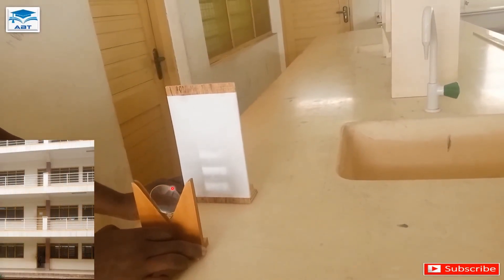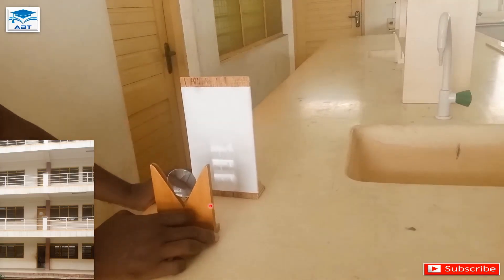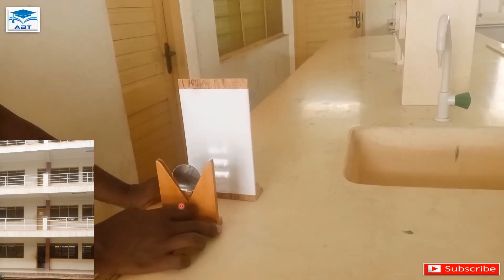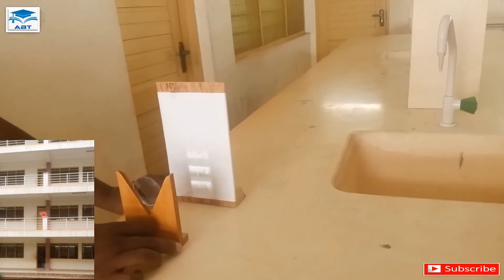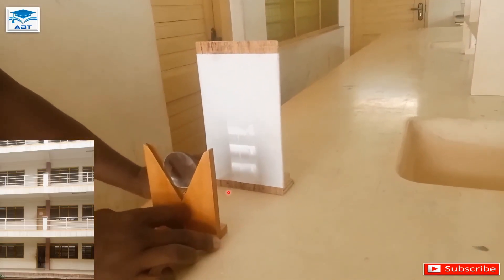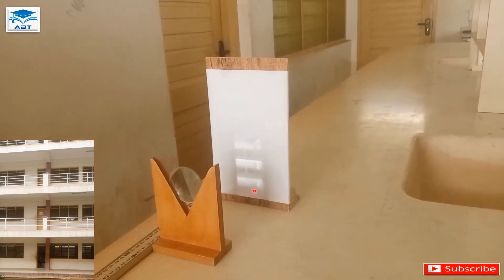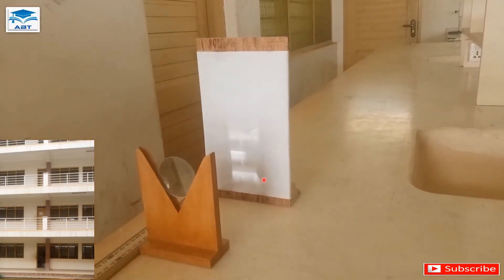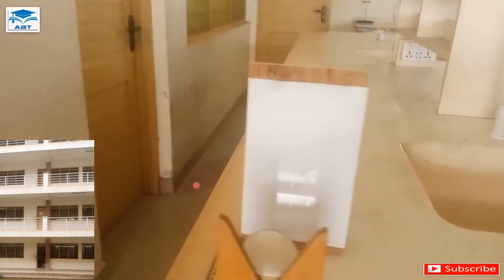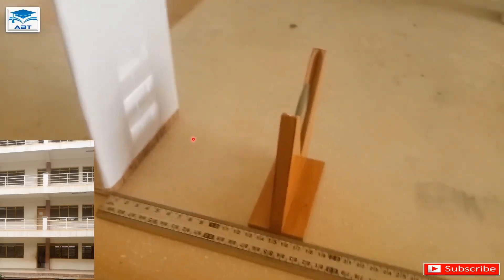We are going to adjust the distance between the screen and the lens until a sharp image of this distant object is formed on the screen. So we have a sharp image of this building on the screen and it's turned upside down or inverted.